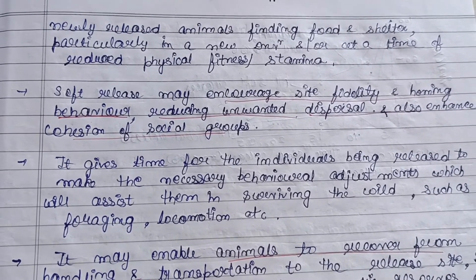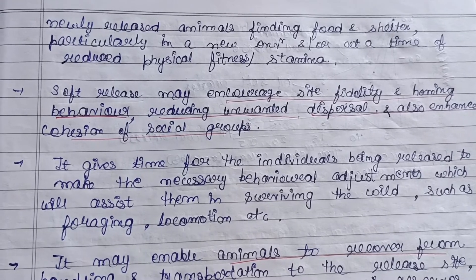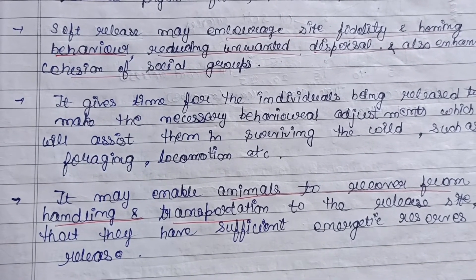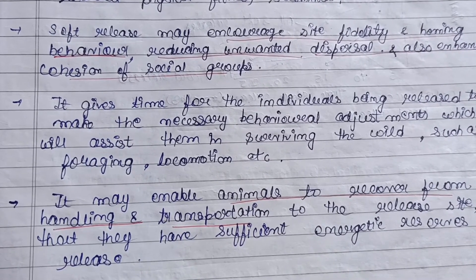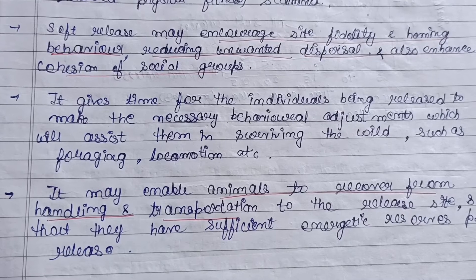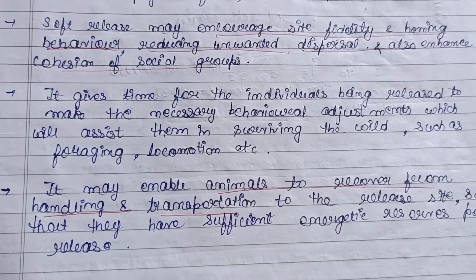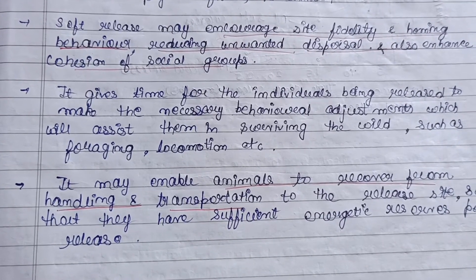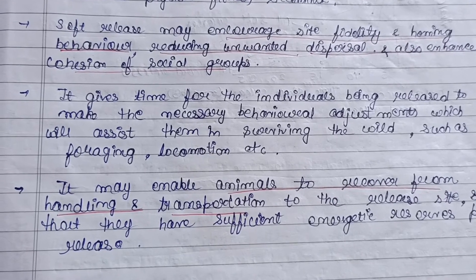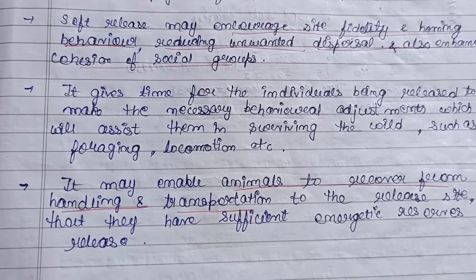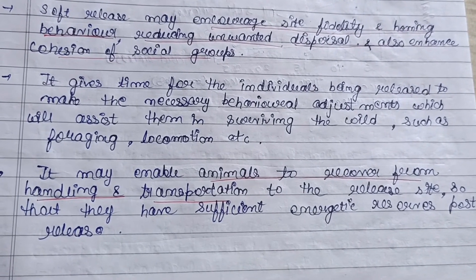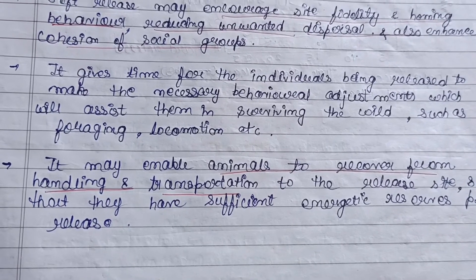Soft release may encourage site fidelity and homing behavior, reducing unwanted dispersion and enhancing cohesion of social groups. There are greater chances of social group formation since caretakers take care of animals as a group. It also gives individuals time to make the necessary behavioral adjustments — such as in foraging and locomotion — to survive in the wild, and enables animals to recover from handling and transportation, ensuring sufficient energetic reserves post-release.